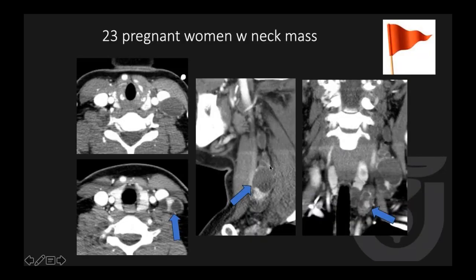A 23-year-old pregnant woman with a neck mass: notice multiple cystic nodal disease with punctate areas of enhancement and possibly calcification in the lower neck paratracheal region. When you see that, most likely papillary thyroid cancer until proven otherwise. It really doesn't matter what the nodule looks like on CT, because CT is not sensitive to detect small thyroid cancer, so you are going to have to recommend ultrasound. Ultrasound found a 4 mm papillary thyroid cancer.